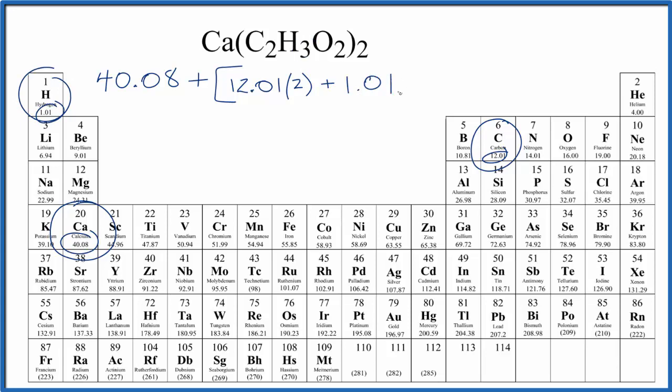Then oxygen, right here, 16.00 grams per mole. We have two of those. And then the whole thing, everything here in these brackets, we're going to multiply that by two. So we have our 40.08.